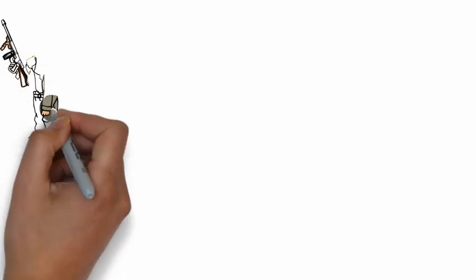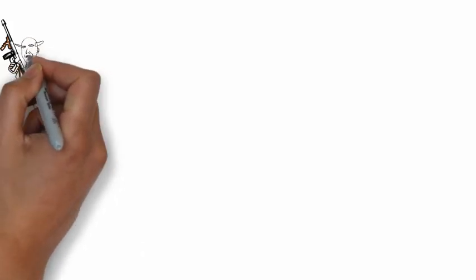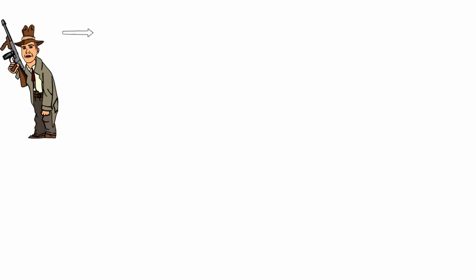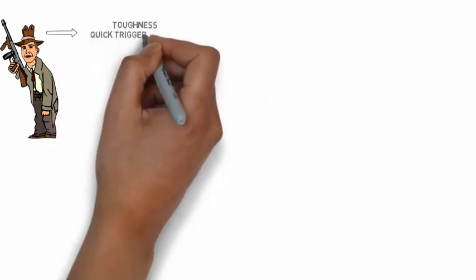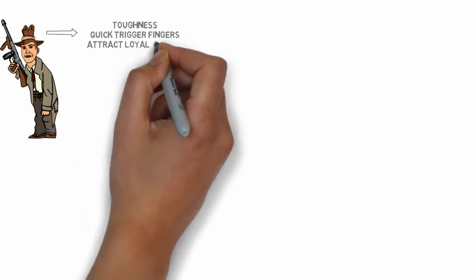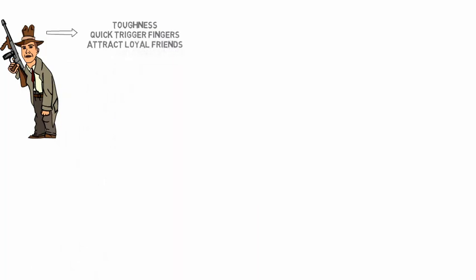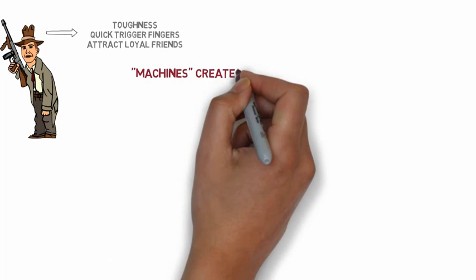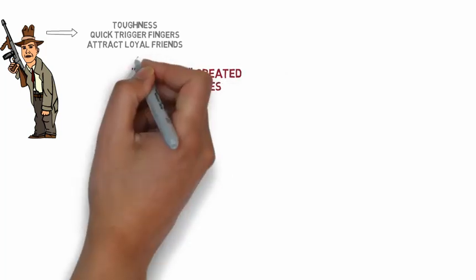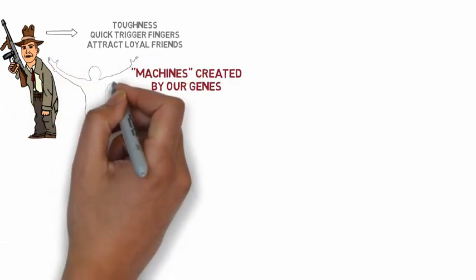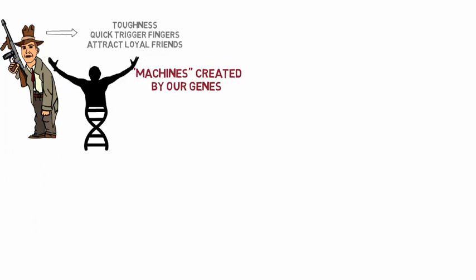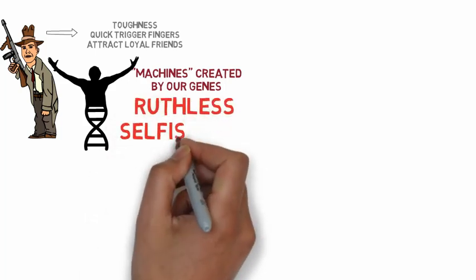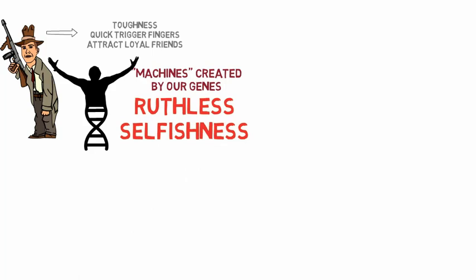Dawkins argues that if we were told a man lived a long prosperous life in the world of a Chicago gangster, we could make assumptions about the sort of man he was — we could expect he would have toughness, quick trigger fingers, and the ability to attract loyal friends. Similarly, Dawkins' central argument is that we are machines created by our genes, and therefore we can make certain assumptions about the quality of our genes. Our genes have survived in a highly competitive world, and therefore a successful gene would strongly possess the attributes of ruthless selfishness.